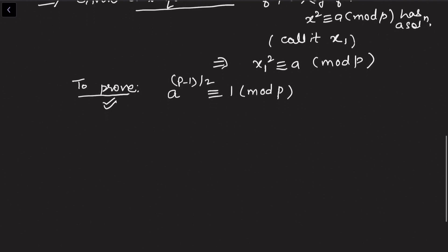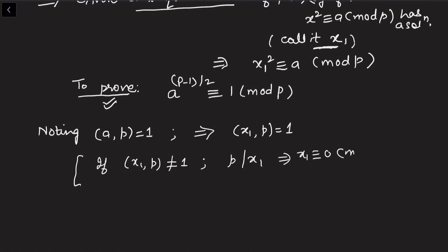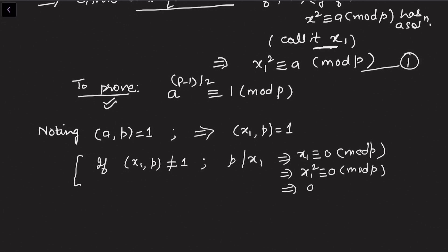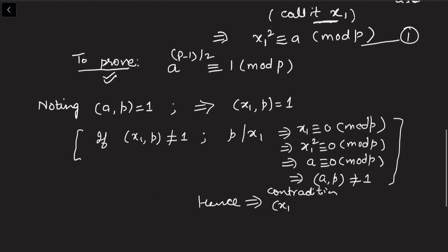We note that gcd(a, p) = 1 as given. This implies gcd(x₁, p) = 1 as well. If not, since p is prime, p divides x₁, meaning x₁ ≡ 0 (mod p), so x₁² ≡ 0 (mod p), and from equation 1, a ≡ 0 (mod p), giving gcd(a, p) = p, a contradiction. Hence gcd(x₁, p) = 1.